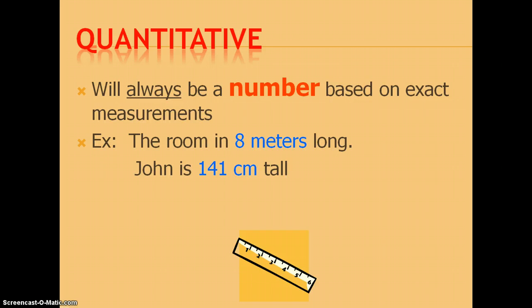And then the other type you could have is quantitative. Quantitative will always be a number based on some exact measurement. The room is eight meters long. John is 141 centimeters tall. Those are examples. But qualitative, the example there would be the room is large, or John is tall, or John is short. That's qualitative. Quantitative actually includes a number.